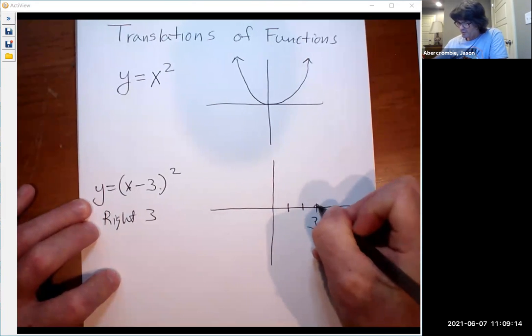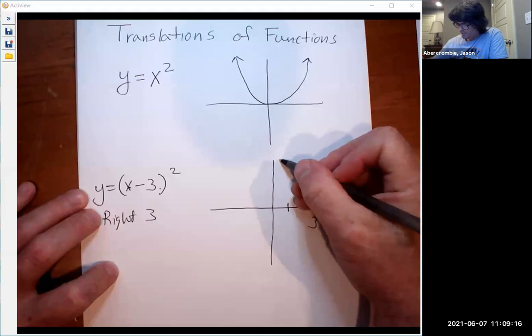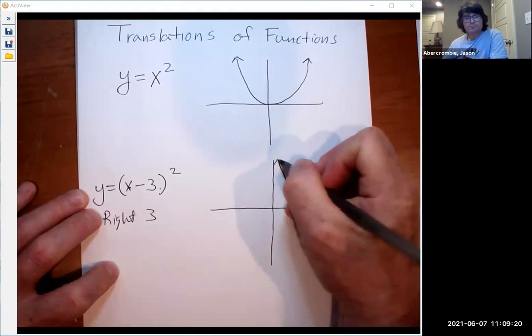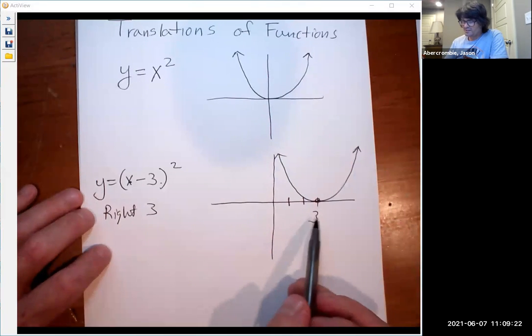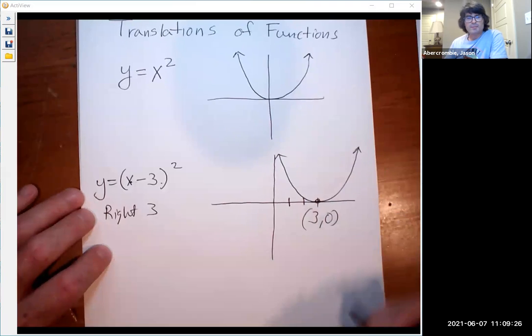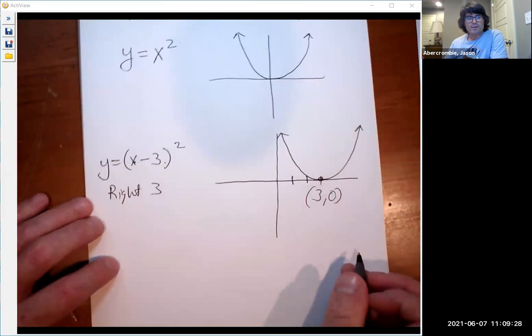And that would be a positive 3. That's why my graph has moved right 3, and it looks like that. If you put in x is 3, 3 minus 3 is 0, and therefore you get the point 3 comma 0 right there.